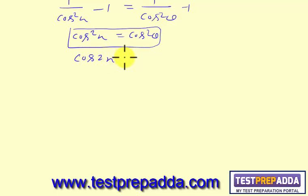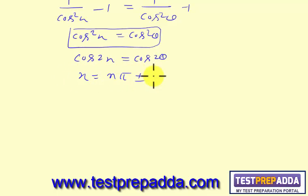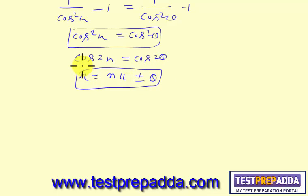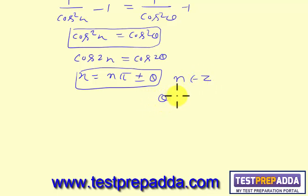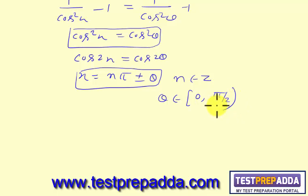Therefore the general solution for tan²x = tan²θ is x = nπ ± θ, where n belongs to integers and θ ∈ (0, π/2). Note: here the interval for θ is open at both ends.